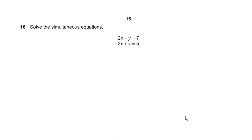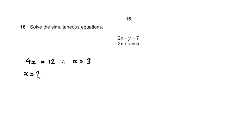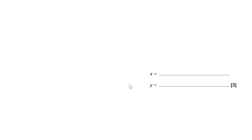Question 16. Solving the simultaneous equations 2x − y = 7 and 2x + y = 5: adding the equations gives 4x = 12, so x = 3. Substituting back: 6 + y = 5, so y = −1. The solution is x = 3, y = −1.